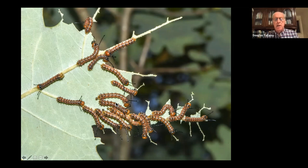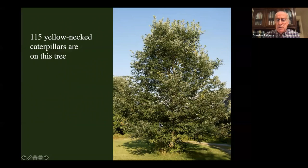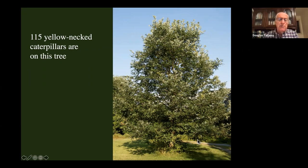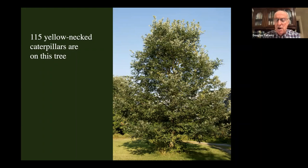I counted 115 yellow-neck caterpillars on our oak tree one year — I did it just on the lower branches — but you can't see any of the leaf damage or any of those caterpillars from a distance. If I knocked on your door and said you've got 115 yellow-neck caterpillars eating your tree, most people would grab the spray can. But they're not going to hurt your tree — it's totally adapted to this type of caterpillar damage. Tammany Baumgarten suggested we all practice the 10-step program: take 10 steps back from your trees and all your insect problems disappear.